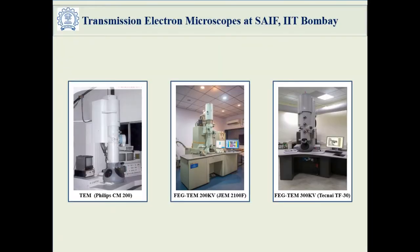The current slide highlights three of our transmission electron microscopes. One of them is a conventional TEM and the other two are field emission gun based instruments with different analytical capabilities. The 200 kV FEG TEM has energy dispersive spectroscopy attached, while the 300 kV FEG TEM has EDS and electron energy loss spectroscopy, that is EELS, attached to it. All are at home at SAFE CRNTS.